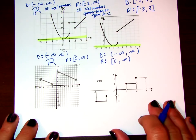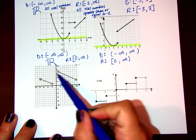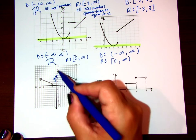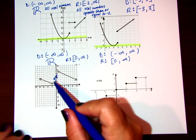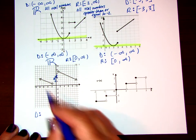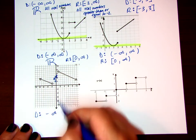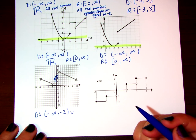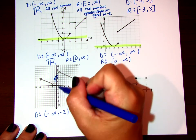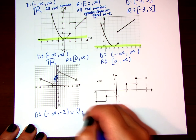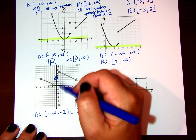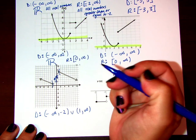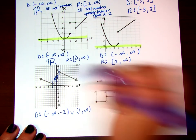On this next graph, there is a definite break or gap in the domain. There's an open dot on one side and an open dot on the other, so neither is included. When stating this domain, we have to state it in parts: from negative infinity to negative two, open bracket because it's not included, union — meaning 'and' — from one to infinity. Again, open bracket because it's an open dot and not included.